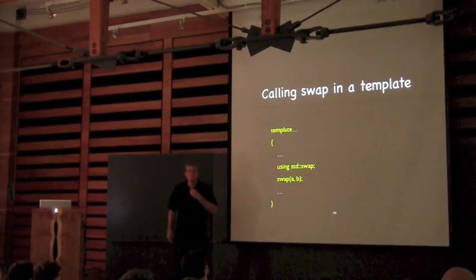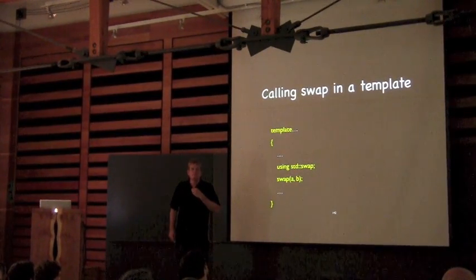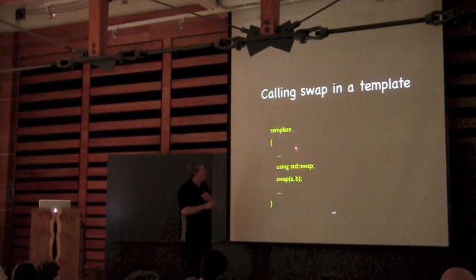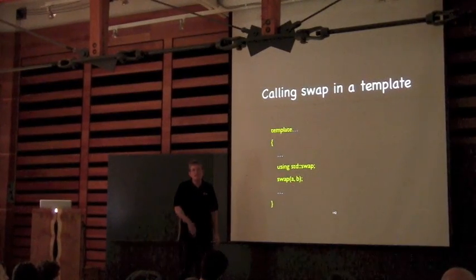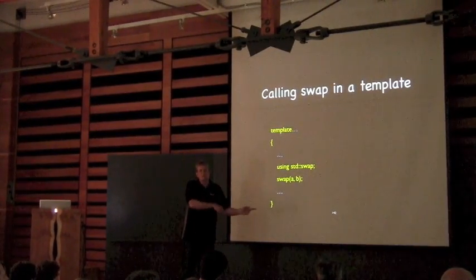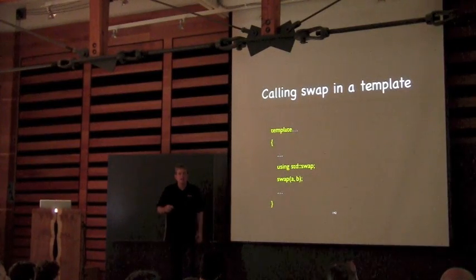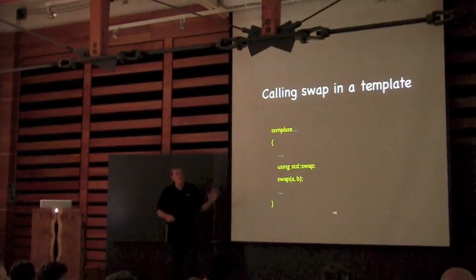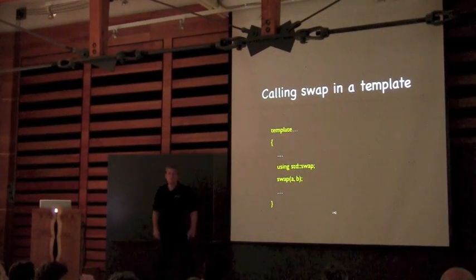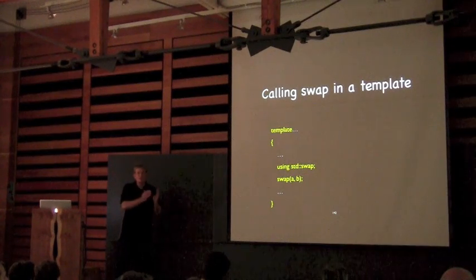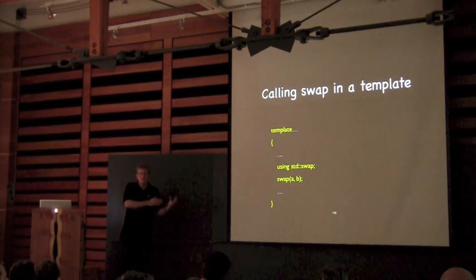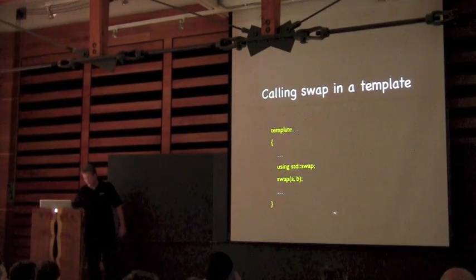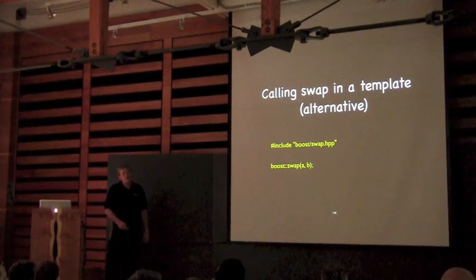Then the question is: why did you bother putting the first one in the std namespace? Because if it's not template code, somebody might say this is not a template so I can just call std::swap. So we want it there if it's not a template. I try to specialize if possible — specializing should happen in the standard namespace. If I can't, I want to overload and hope that people call this one. If that's too much to remember, you can also do this and it will do the right thing.